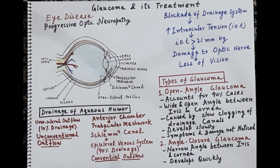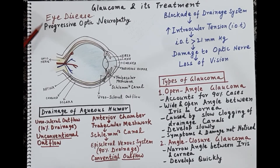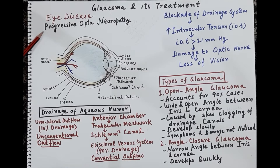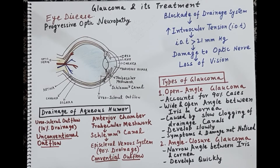In today's class we are going to talk about glaucoma and its treatment. Glaucoma is an eye disease characterized by progressive optic neuropathy — that is, progressive damage to the optic nerve of the eye. If this optic nerve is damaged, it can result in the progressive loss of vision and finally blindness.